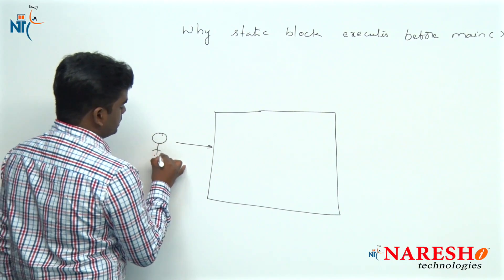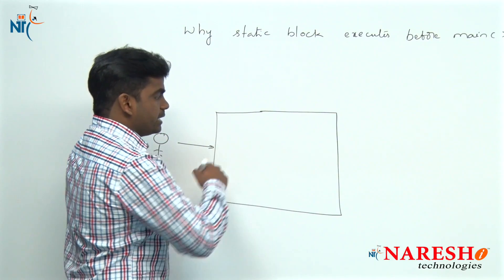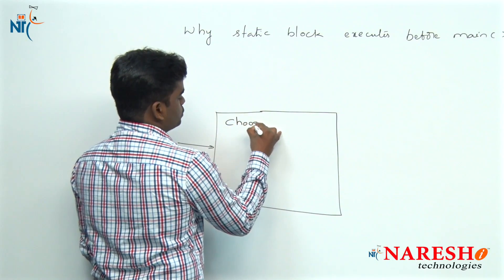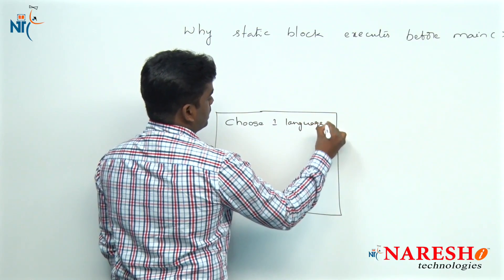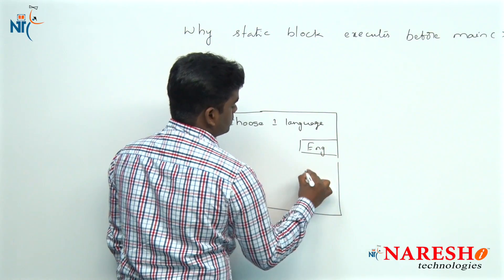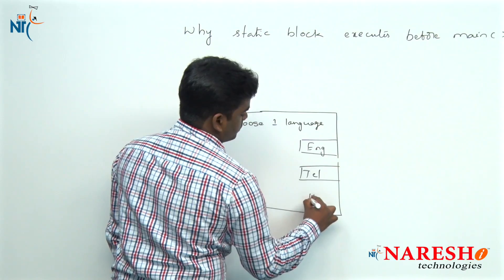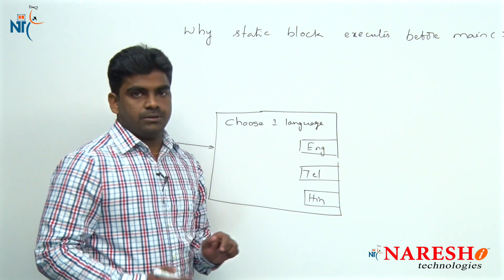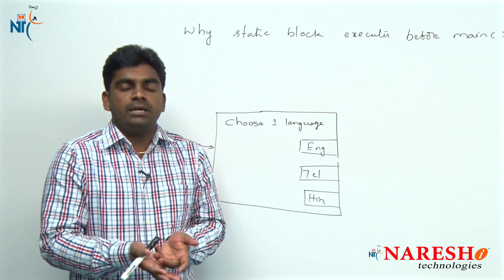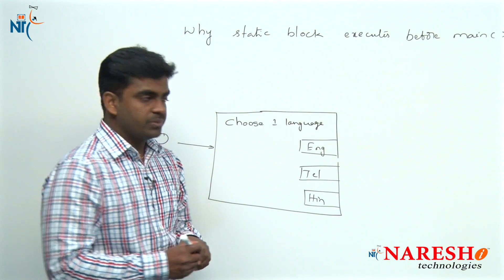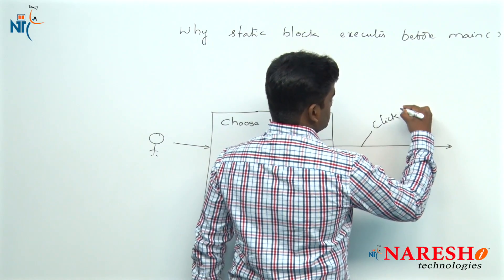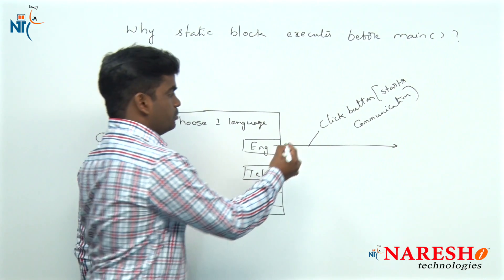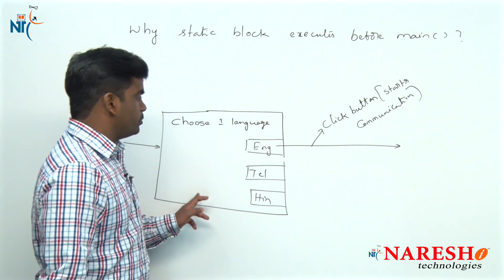You just entered to communicate, and on the screen you are expecting some information — we will definitely expect some information. What is that information? For example: choose one language, and it gives some options — English, Telugu, Hindi. Some things we will expect on the screen. But who will provide this information when the communication has not yet started? Communication will start whenever you click on English — clicking the button starts the communication.